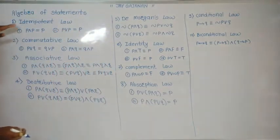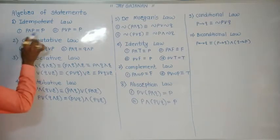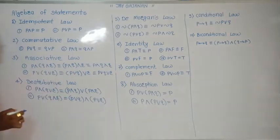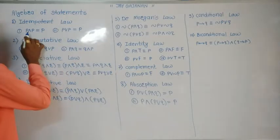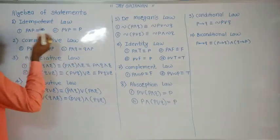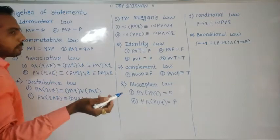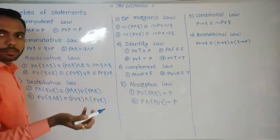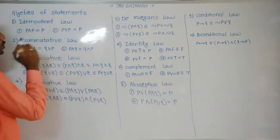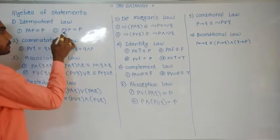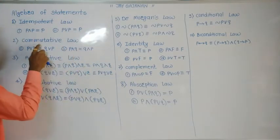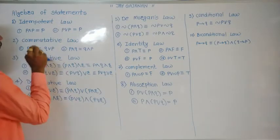The first law is the idempotent law. P and P equals P; P or P equals P. It is very easy. If we have a statement '3 is an odd number and 3 is an odd number', then the result will be '3 is an odd number'. It means P and P equals P. Similarly, P or P equals P.